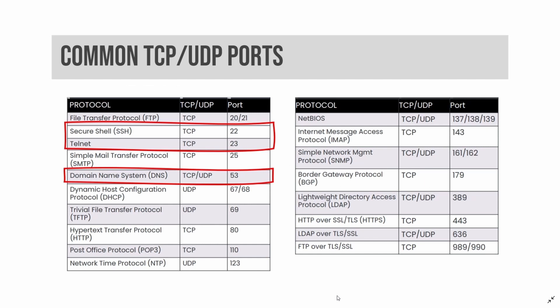Hypertext Transfer Protocol, or HTTP, transfers unencrypted web-based data. HTTPS, or Hypertext Transfer Protocol Secure, transfers encrypted web-based data via SSL/TLS. HTTP uses TCP port 80 and HTTPS uses TCP port 443. HTML, or Hypertext Markup Language, is used to display web content.